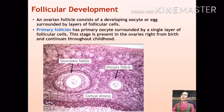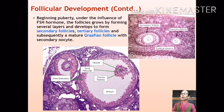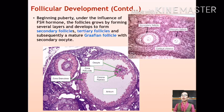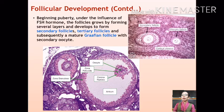With the onset of puberty, under the influence of FSH (follicle-stimulating hormone), the primary follicles grow along with the primary oocyte. A primary oocyte cell surrounded by multiple layers of follicular cells forms the secondary follicle stage. As the secondary follicles grow, they form an antrum, which is a cavity filled with follicular fluid, and follicles with a large antrum are called tertiary follicles.